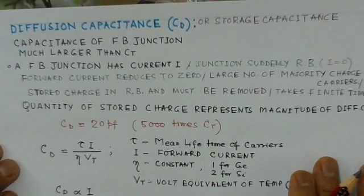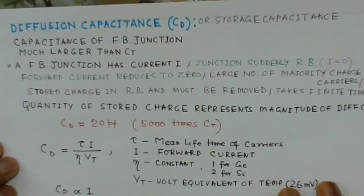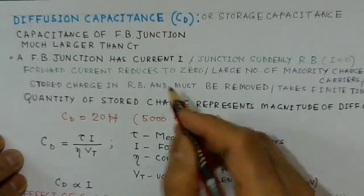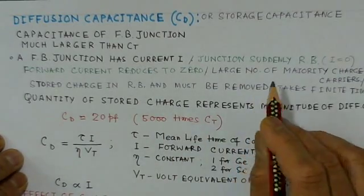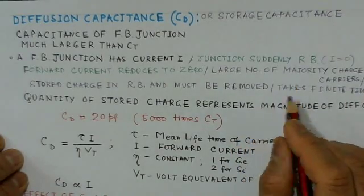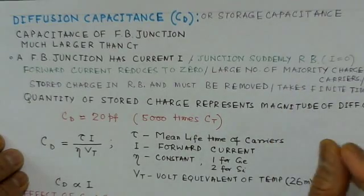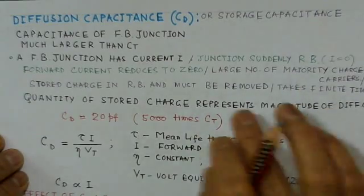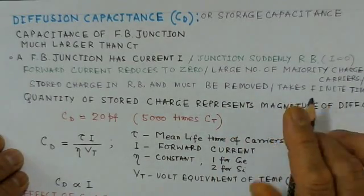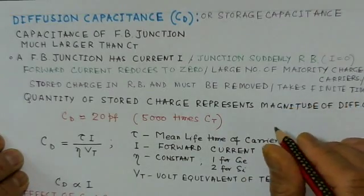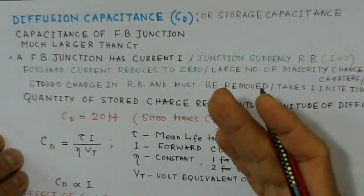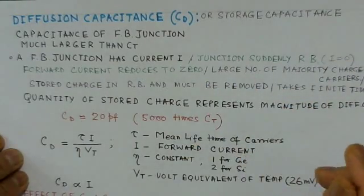You can see from the semiconductor physics that when the junction is forward biased, the electrons are injected from the N region into the P region, and the holes are injected from the P region into the N region. Hence when they cross the junction, they become the minority carrier in that region and combine with the majority carriers present there, and they decay exponentially with the distance from the junction.